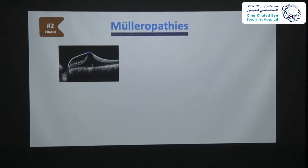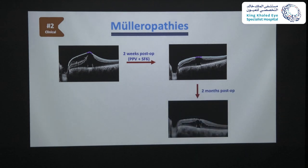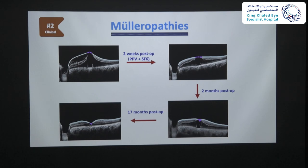Following the patient post-operatively: two weeks post-op, the elevated central fovea had dropped down significantly. Two months post-op, the Müller cell cone started to look like a normal cone. At 17 months post-op, we can see almost a normal foveal contour with persistent foveal cavitation, possibly secondary to muelleropathy caused by the previous maculopathy due to the optic disc pit. It was fascinating to see how this maculopathy evolved post-operatively and the dynamic role of Müller cells, especially the Müller cell cone.